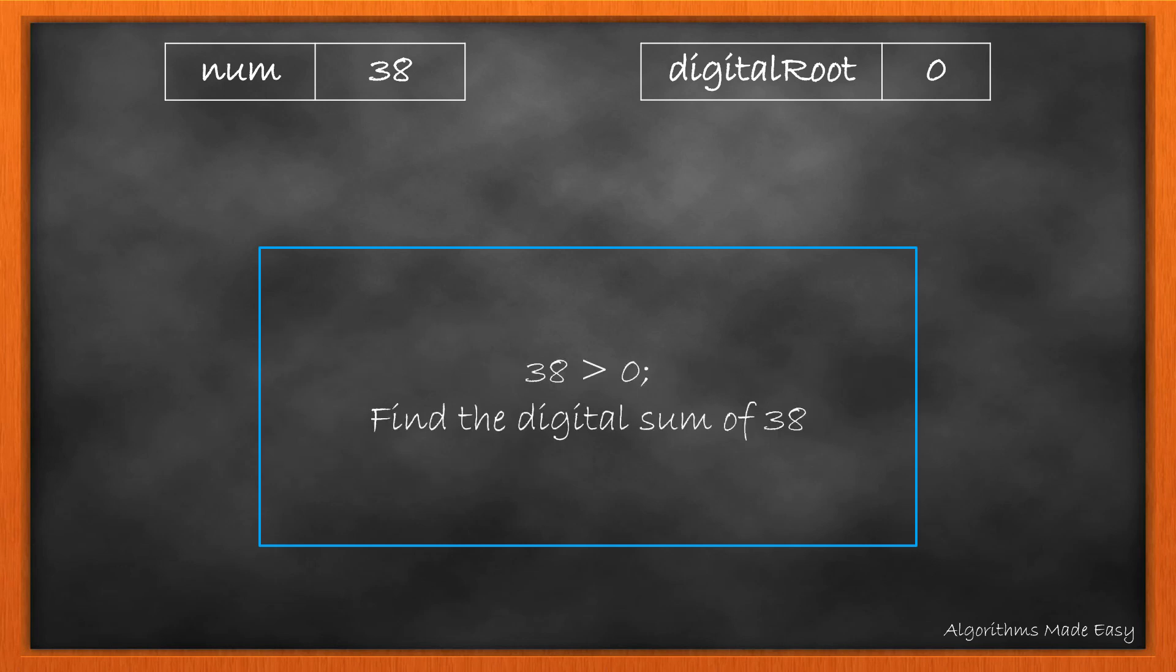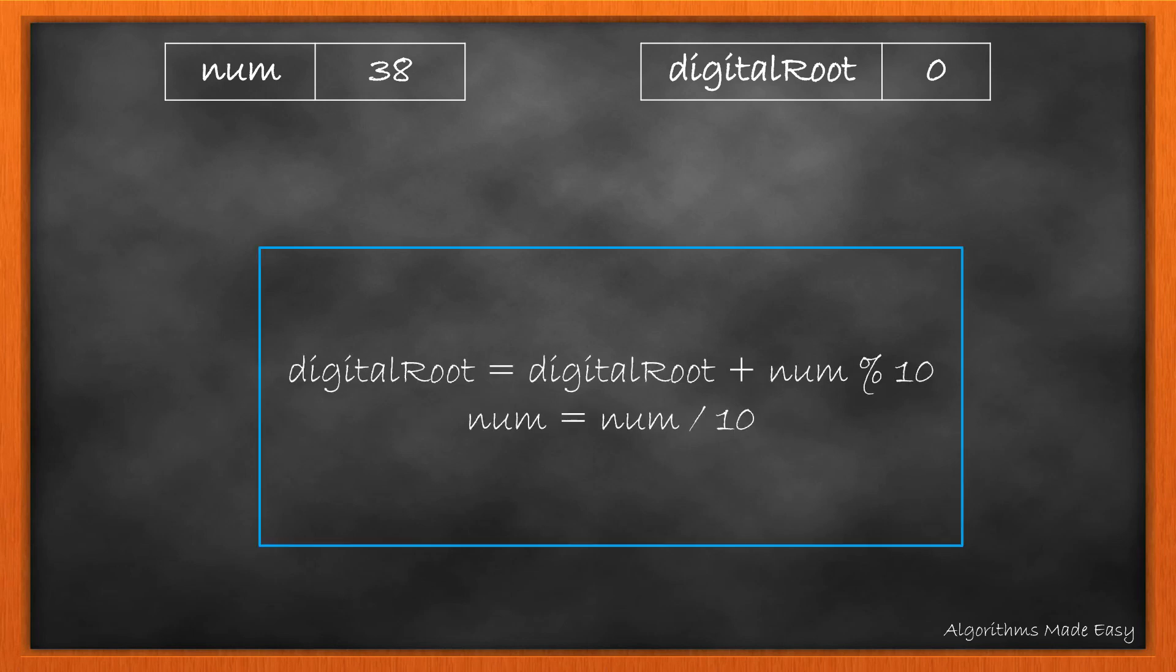As 38 is greater than 0, we add the digits. To do this, we find num mod 10 that gives us the value for the last digit and update the number to num divided by 10. That will reduce the number so that we can find the next digit in the next iteration.